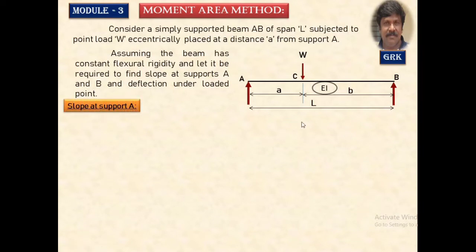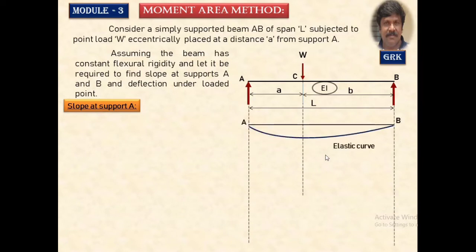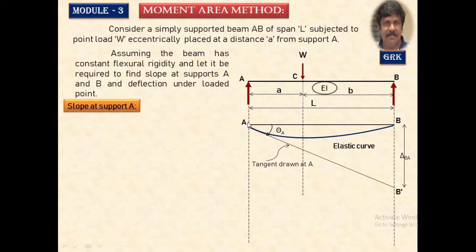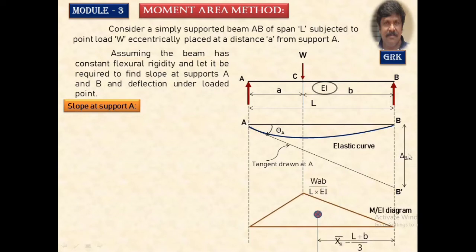To calculate the slope at A, first draw the projectors, then draw the elastic curve. Since this is a simply supported beam, the curve will be sagging in nature. Draw a tangential line at support A. The angle made with respect to the horizontal line AB is the slope at A, called theta_A. The vertical deflection from B to B-dash is called delta_BA, that is the deflection at B with respect to A.